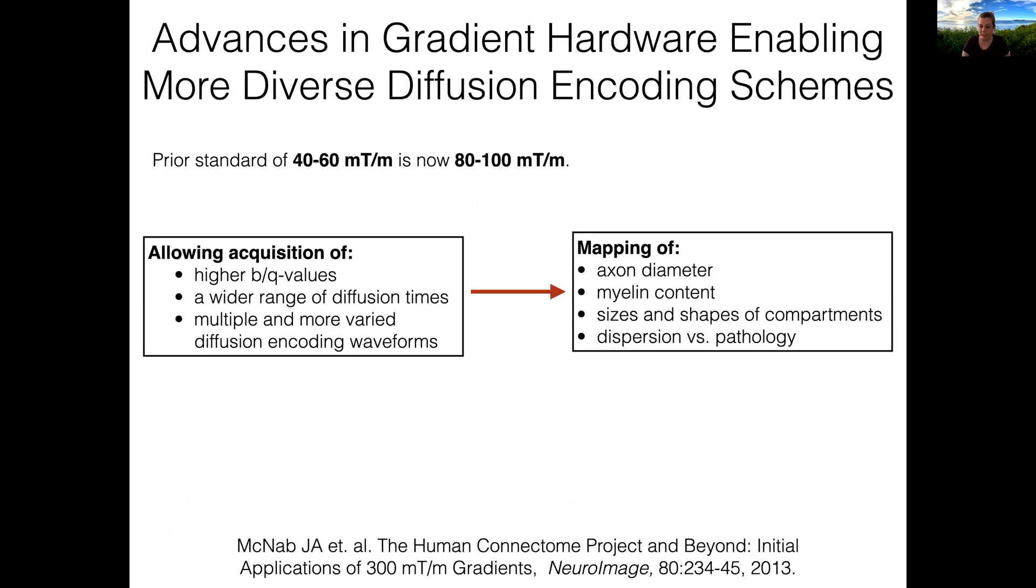Something that is enabling more diverse diffusion encoding schemes are the significant advances that have been made in gradient hardware over the last decade. The previous standard maximum gradient strength was around 40 to 60 millitesla per meter for human MRI scanners and that's increased to about 80 to 100 millitesla per meter. There are now several scanners available as a product by multiple different vendors that provide these capabilities. The ability to execute stronger and in some cases faster gradients enables us to acquire diffusion data with higher b values and q values, a wider range of diffusion times, and multiple and more varied diffusion encoding waveforms.